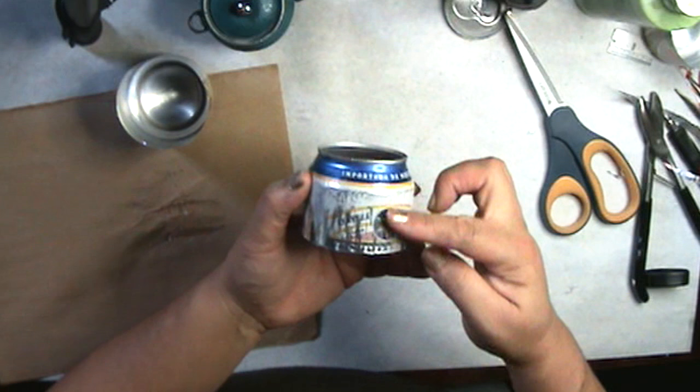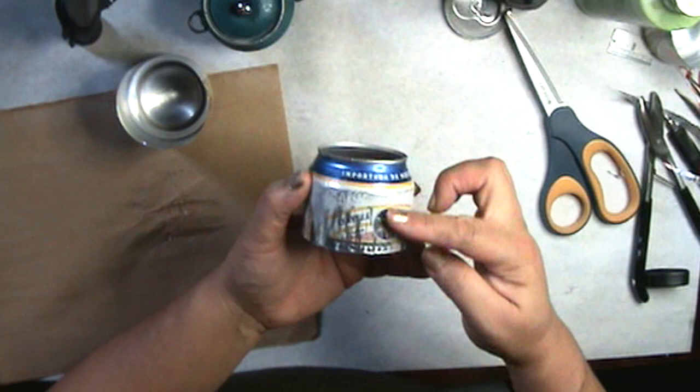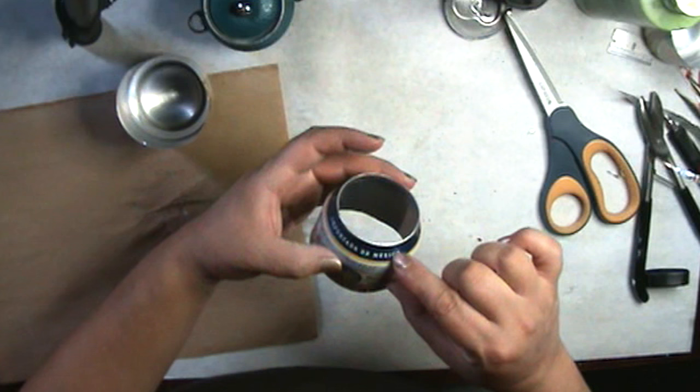Now we're gonna cut our can in half. Trim the raw edges so that you don't cut yourself and this is where you decide the length of the little pot.